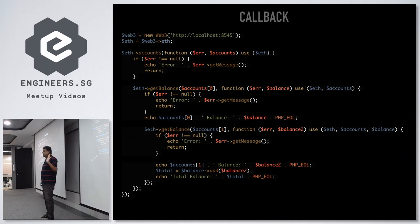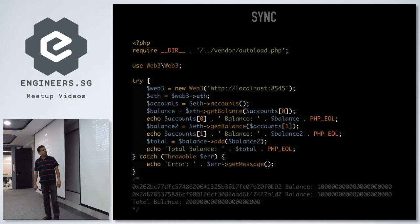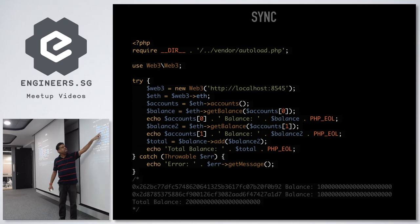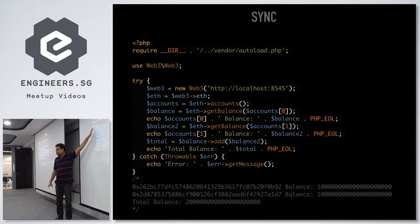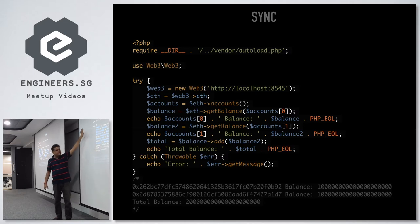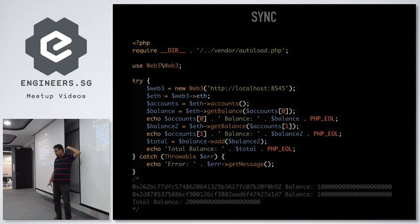If this were a synchronous operation, the code would be very simple: get the eth object, get the accounts, get the balance for the first account, echo it out, get the balance for the second account, sum them up, and print them. If there's any error you just wrap it in a try statement and print the error message. That simple code does exactly the same thing as the nested callback version — but unfortunately these are asynchronous calls that only give you a callback.